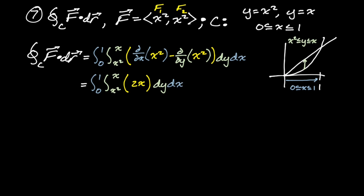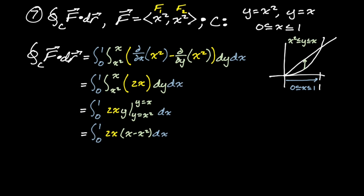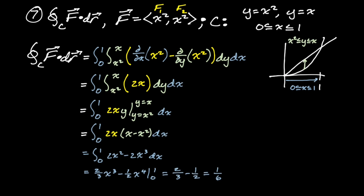We integrate first with respect to y, then x. Integrating x² with respect to y just introduces a y, since there are no y's in it. We get the integral from zero to one of x² · y, evaluated from y = x² to y = x. By the fundamental theorem, that gives x²(x − x²) = x³ − x⁴. Distributing and applying the reverse power rule, then subbing in — plugging in zero gives zero — so we get 2/3 minus 1/2, which is 1/6.